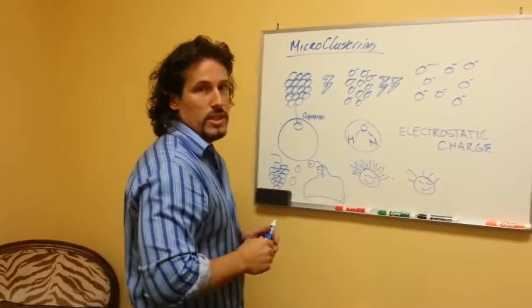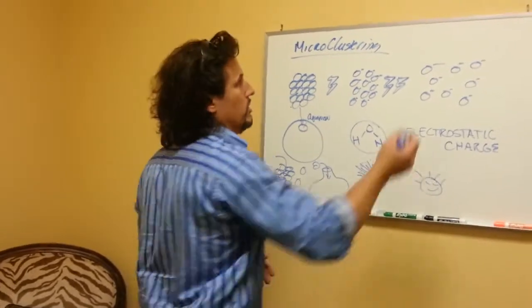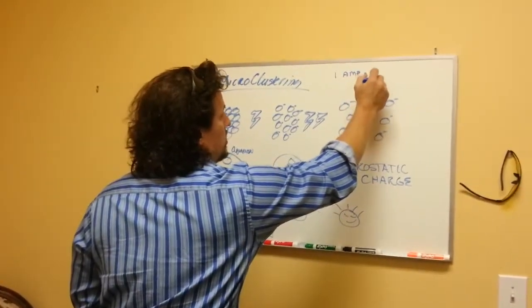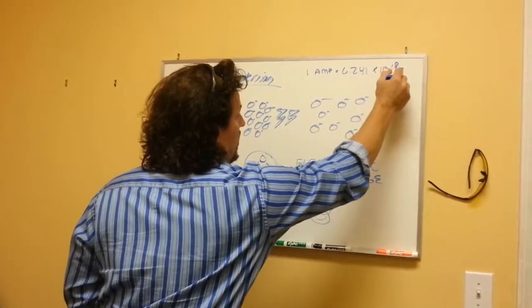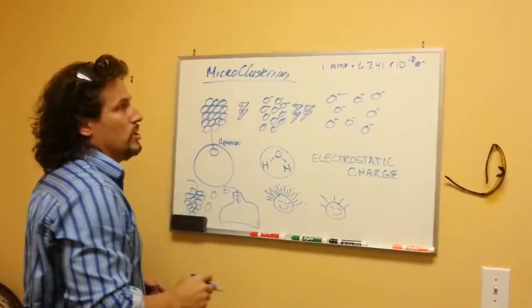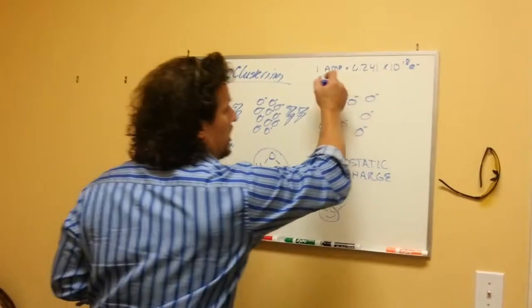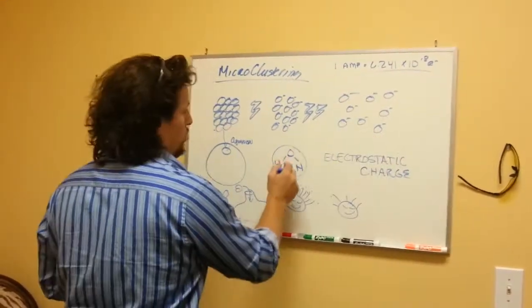Each time the electron gets charged, that's where your amperage becomes important, because one amp equals 6.24 times 10 to the 18 electrons. So the more amperage you have, the more energy or the more electrons you're dumping into the system. And when these things break apart...